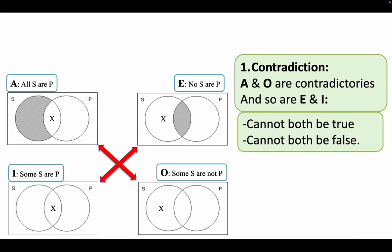The first one is the law of contradiction. This simply says that A and O are contradictories, and so are E and I. It means that if one is true, the other one must be false. They cannot both be true; they cannot both be false. For example, if I say all bananas are yellow, then it must be false that some bananas are not yellow. And if I say no bananas are yellow is true, then it must be false that some bananas are yellow.